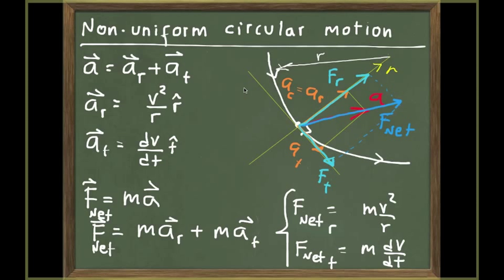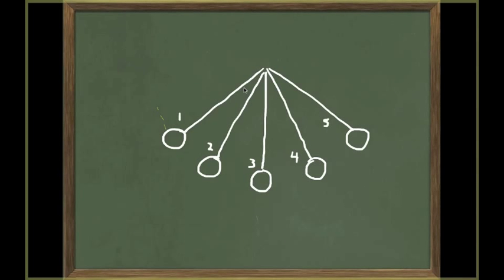If dV/dt is positive the tangential force points in the direction of velocity; if it is negative, it points in the opposite direction. Let's go back to a familiar example with the pendulum: released at point 1, it swings all the way to point 5 where it momentarily stops, then swings back. We'll look at the forces and accelerations at five different points along the path of the pendulum.